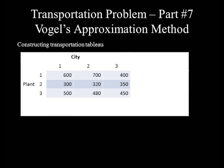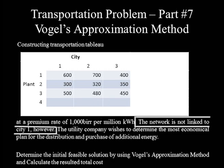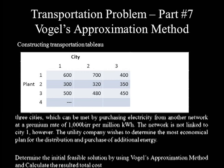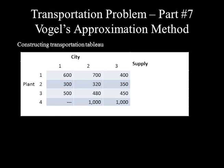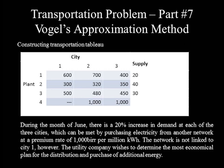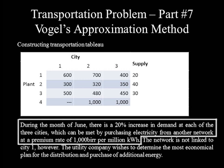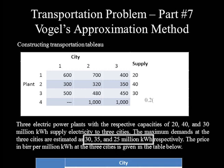The fourth source is represented by adding a fourth row. As mentioned in the problem, the external network is not linked to C2, so no unit cost is mentioned under the column for C2. The unit cost for transport from the external network to each of the other cities is 1,000. Supply is designated at the right-hand margin: plant 1 supply is 20 million kWh, plant 2 is 40 million kWh, and plant 3 is 30 million kWh. Additional power needed from the network is 20% of total demand — 0.2 × (30 + 35 + 25) = 18 million kWh.